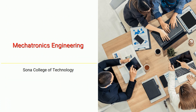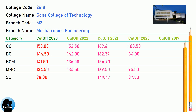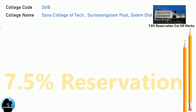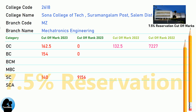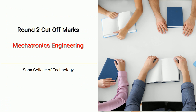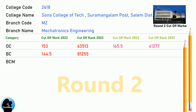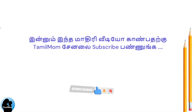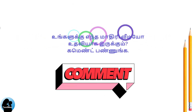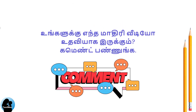DNA cut-off for Sona College of Technology in Mechanical Engineering. DNA 7.5 Reservation cut-off for Sona College of Technology in Mechanical Engineering. DNA Round 2 cut-off for Sona College of Technology in Mechatronics Engineering. DNA Round 2 cut-off for Sona College of Technology in Mechatronics Engineering.